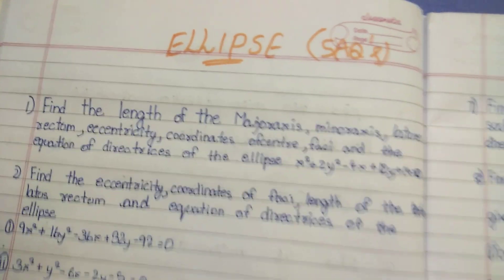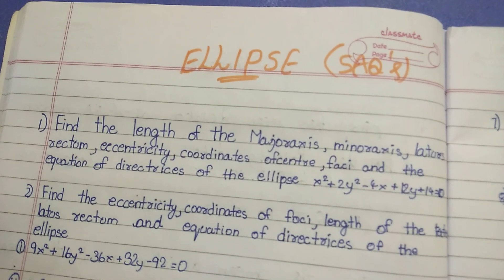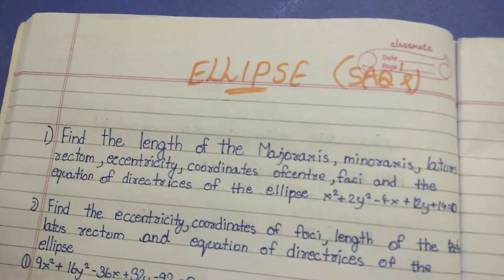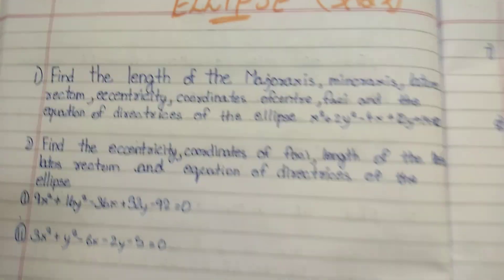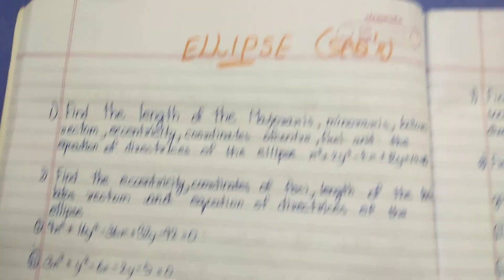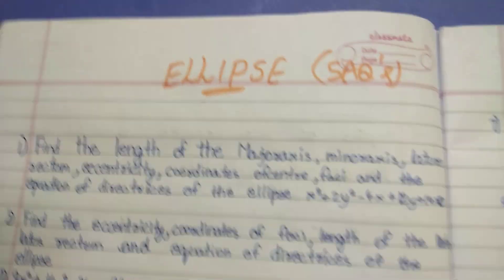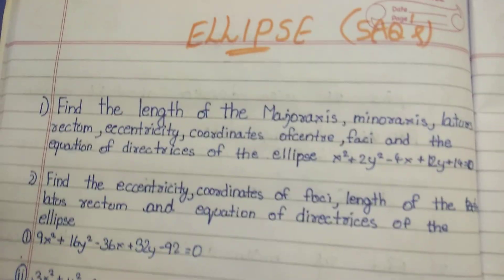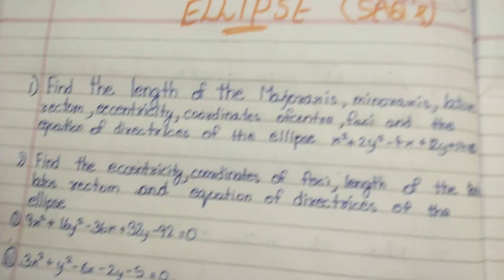Ellipse — four marks questions and two marks questions. Okay, I am going to explain the question. We will explain the question. Okay, we will practice the question.